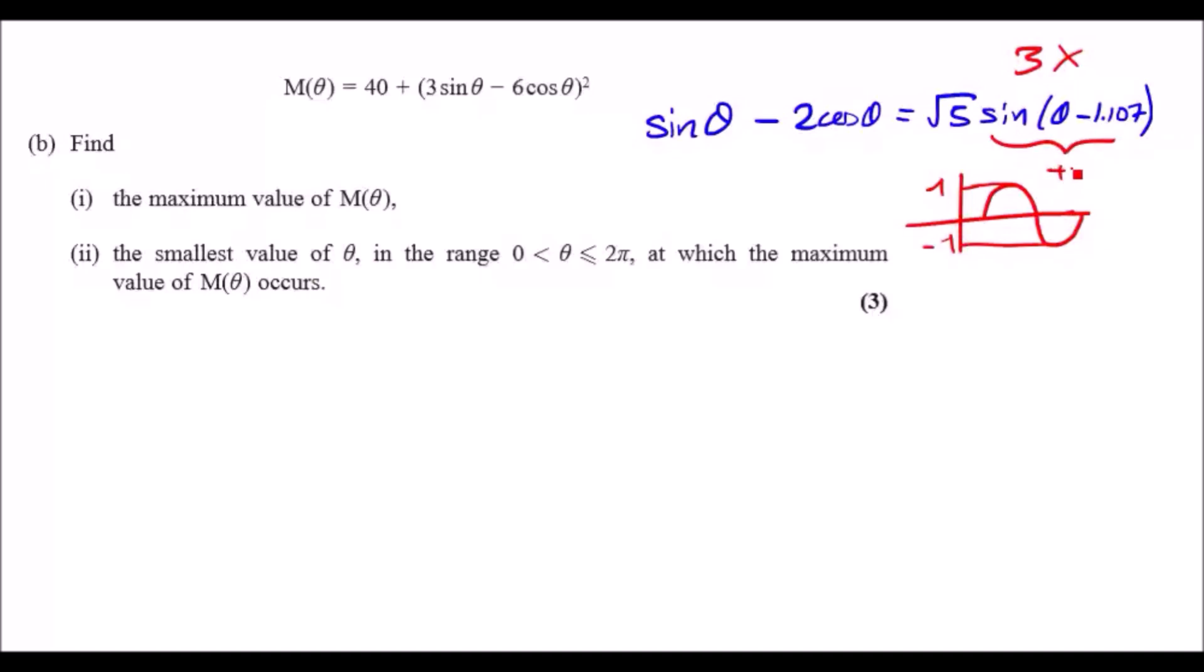So we can essentially say that all of this here is plus one if we want to maximize it. So let's put the subtraction back in the equation. So this means that the maximum value of M(θ) equals 40 plus...